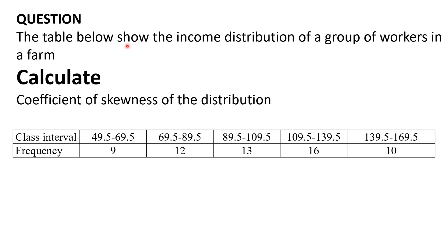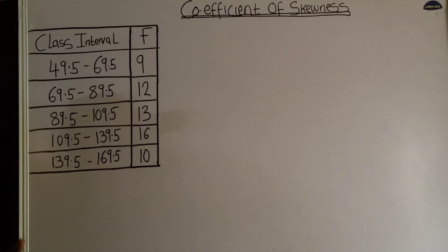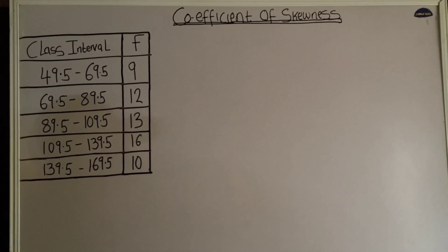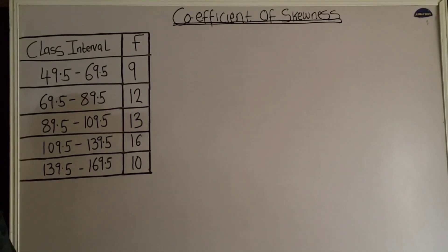The table below shows the income distribution of a group of workers in a farm. Calculate the coefficient of skewness of the distribution. To calculate the coefficient of skewness for this data, the first step is to remember your formula.